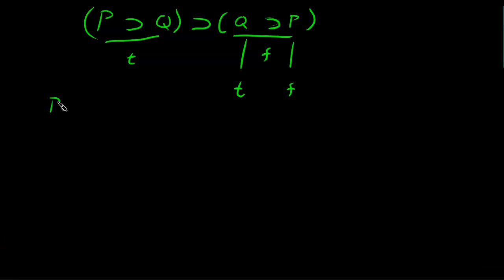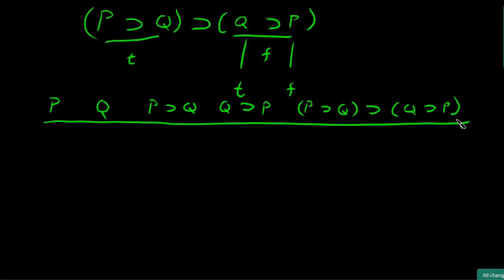So if we write out that entire line of the truth table, we have false for P, true for Q, P implies Q is true, Q implies P is false, and so the entire expression is false.